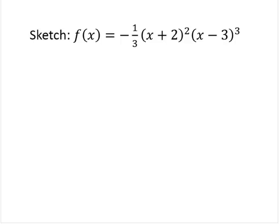Sketch the function f of x equals negative one-third times x plus 2 squared times x minus 3 cubed. So first, let's identify the zeros of this function and their respective multiplicity.